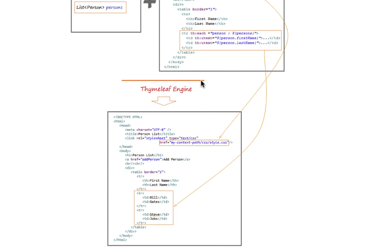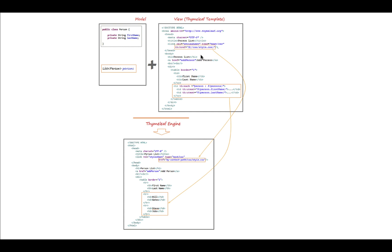For example, this code snippet has Thymeleaf expressions, and the Thymeleaf engine will replace these expressions with model data and produce new text that will be added to the final HTML page. If you look at the result of these Thymeleaf expressions over here — just remember, the Thymeleaf engine will parse the template and uses model data to replace the marked positions to create new text in the HTML page. This is how the Thymeleaf engine basically works.